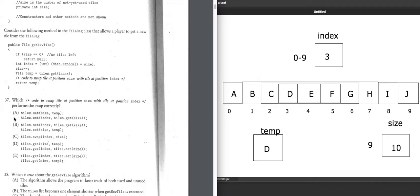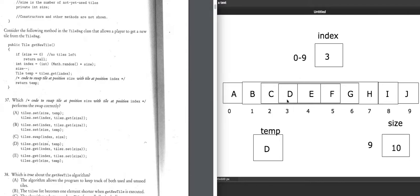On closer inspection, option A doesn't work because it overwrites element size — which is now 9 — with temp, putting the D tile into element 9. Then it takes tiles.get(size), which is element 9, and puts it into element 3. But since D was already placed into element 9, you'd end up with D in both position 9 and position 3. That's not correct — the order is wrong.